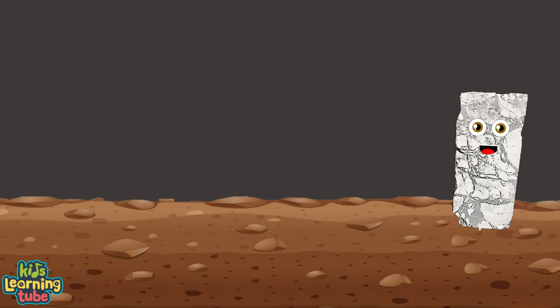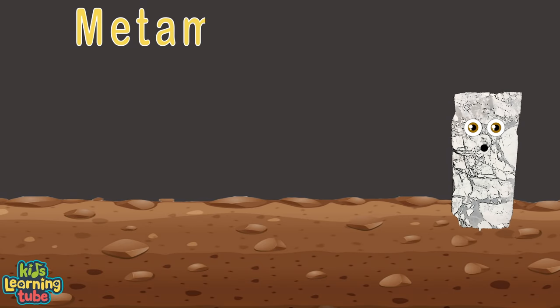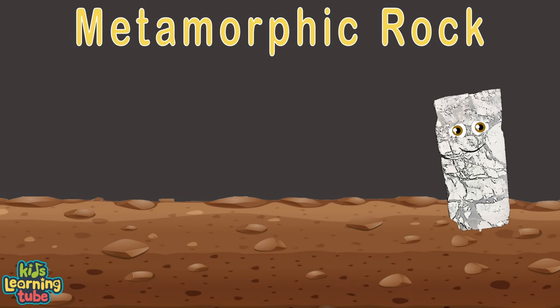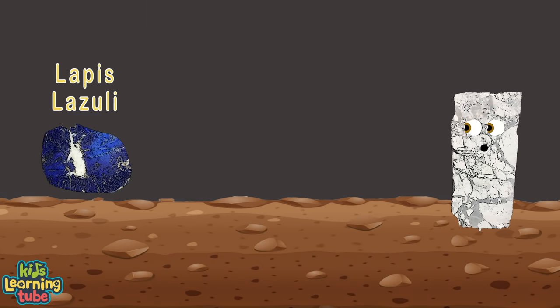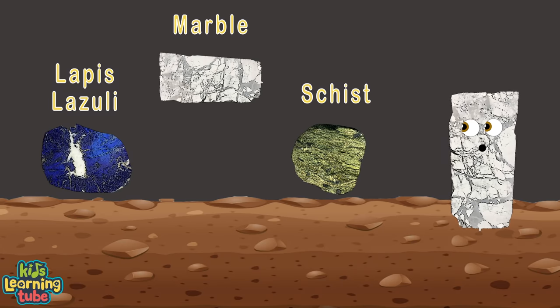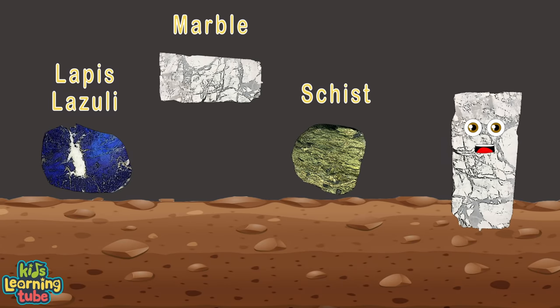Here are some examples of metamorphic rock: lapis lazuli, schist, and beautiful marble.